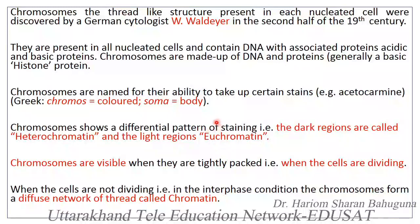Chromosomes show a variable pattern of condensation and are visible when they are tightly packed, that is, when the cells are dividing. In non-dividing cells, the chromatin fibers remain loosely bound. But when the cells divide, these chromatin fibers get condensed into the form of chromosomes. When the cells are not dividing — that is, in interphase conditions — the chromosomes form a diffuse network of thread called chromatin.